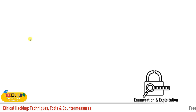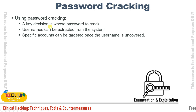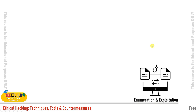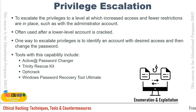A key decision in password cracking is whose password to crack. Usernames can be extracted from a system and specific accounts targeted. A common problem is that poorly written applications reveal whether the username is wrong versus the password being wrong — giving attackers a hint that the username exists and they only need to crack the password. The best practice is simply to display a generic message like 'incorrect login details' without specifying which field is wrong.